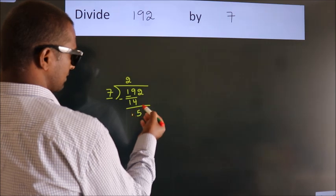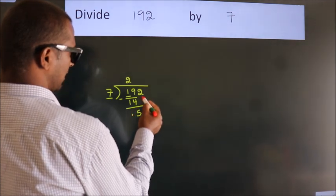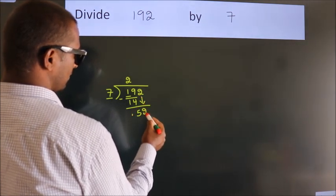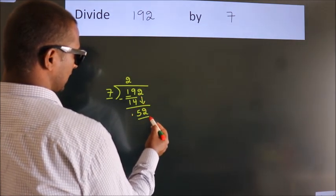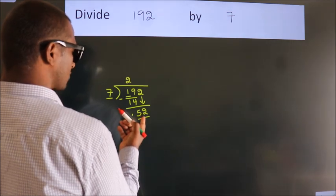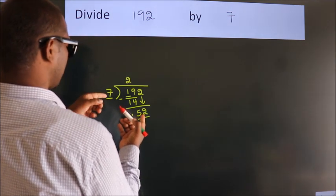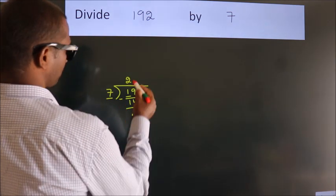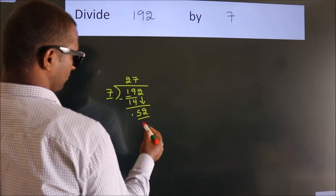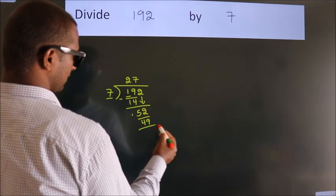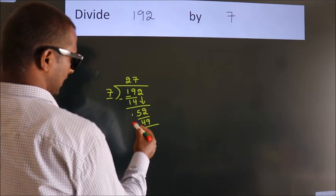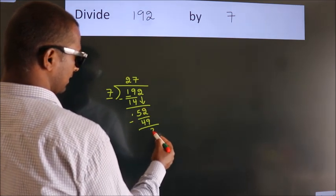After this, bring down the beside number. So 2 down, making 52. A number close to 52 in the 7 table is 7 sevens 49. Now we subtract. We get 3.